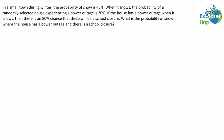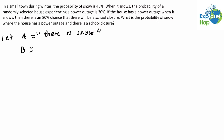First, let's start by defining the following events. We'll let event A be the event that there is snow. Next, we'll let event B be the event where a randomly selected house has a power outage. And finally, we'll let event C be the event where there is a school closure.